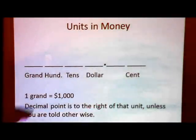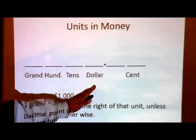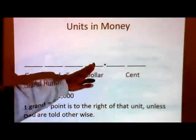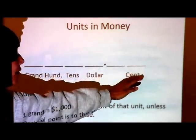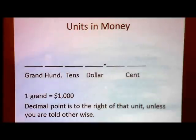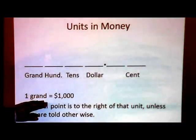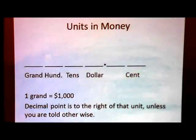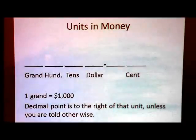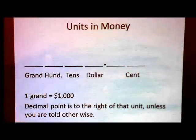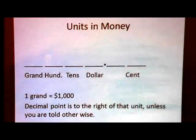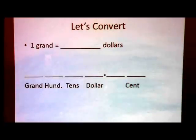Going back to money: the ones column is the dollar, the thousands column is the grand, and on the other side of the decimal point is the cent. One grand equals $1,000. How do we figure that out? We move the decimal point. Rule of thumb: the decimal point is always to the right of that unit, unless you are told otherwise. So let's do a conversion problem — let's say you don't know that one grand equals $1,000 but you have to figure it out.